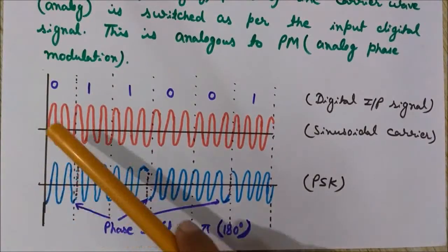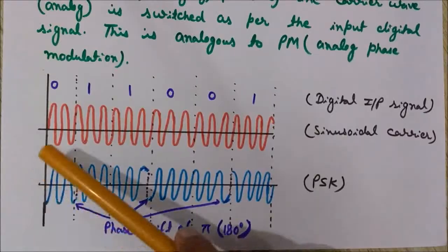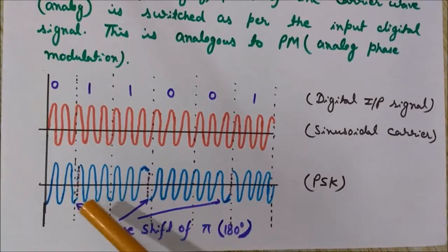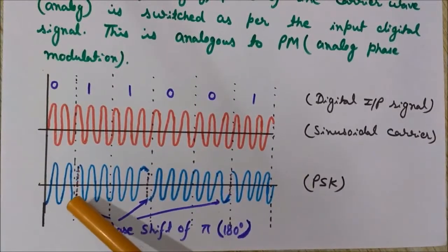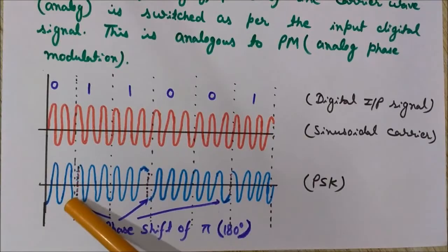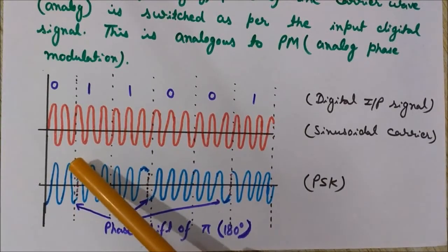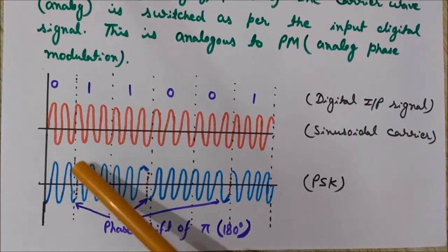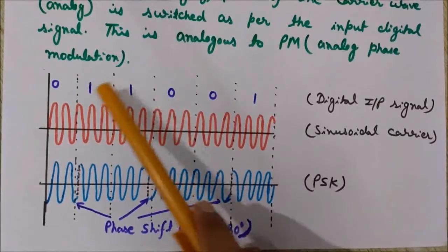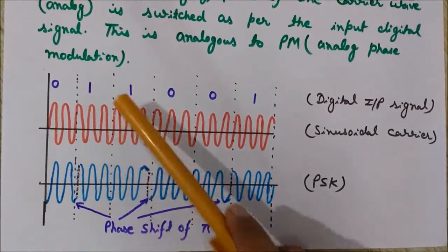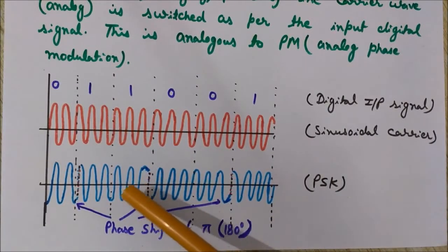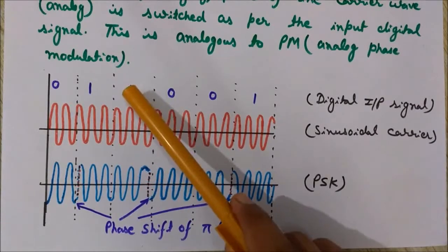Since here it is zero, there is no change in the wave and this carrier wave is transmitted. At this place it has changed from zero to one, so a phase shift has taken place here. You can see the wave was going down but it has started going upward — this is a phase shift of pi. At this place there is no change from one to one, so there is no phase shift and the continuous analog carrier wave is transmitted.